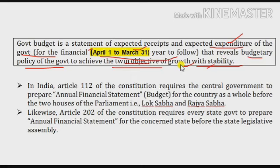It reveals the sources of income and highlights the government's goals of growth and stability. So, simply put, the government budget is a statement presented by the Finance Minister on the 1st of February in the Parliament of India, showing expected receipts and expected expenditure for the financial year. Through this annual financial statement, the government's budgetary and fiscal policies are unveiled, aimed at achieving the goals of economic growth and stability.